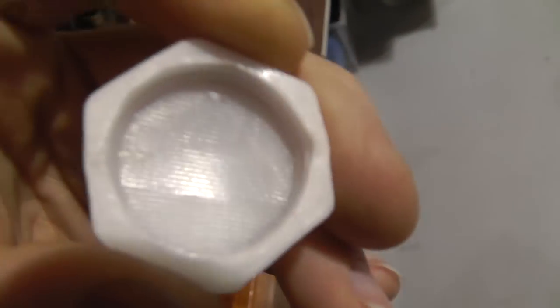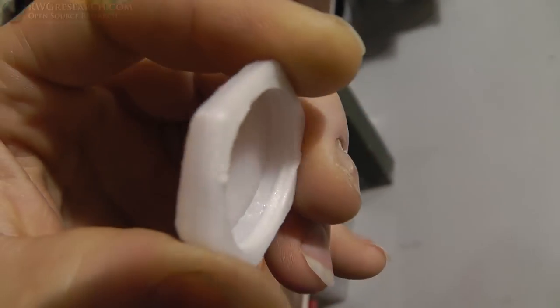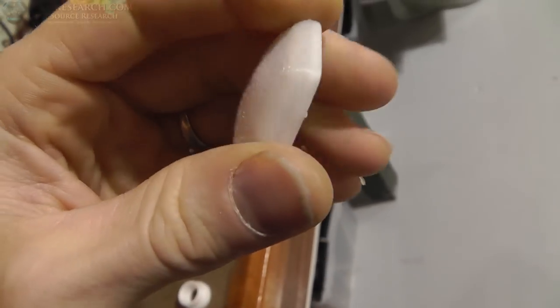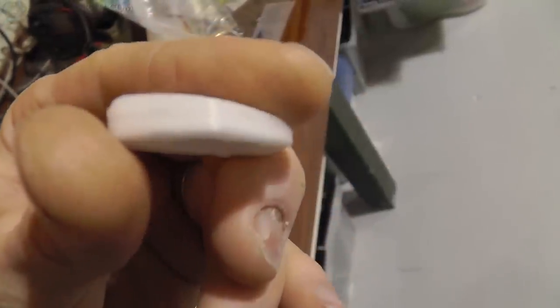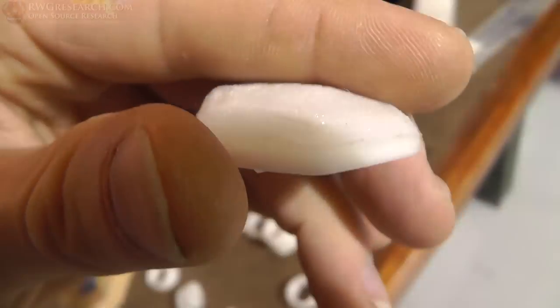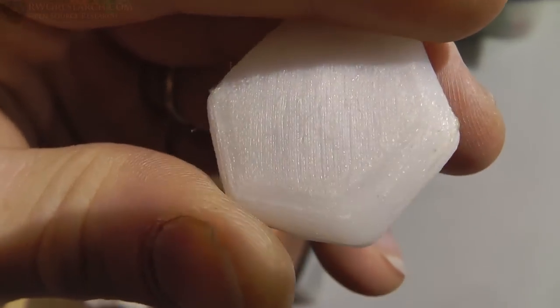But check this out - this is like solid. I couldn't even break this, I tried to bend this in half with pliers, could not break it. You can see the difference right there. The first couple of layers are almost clear.